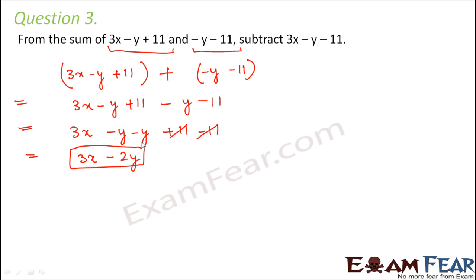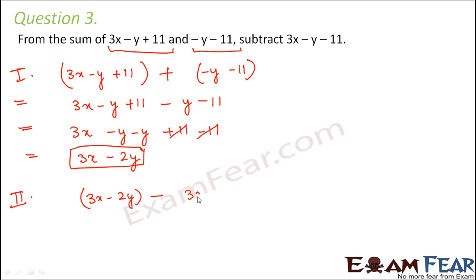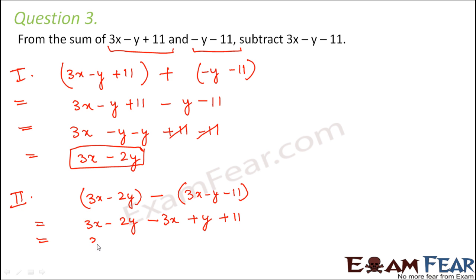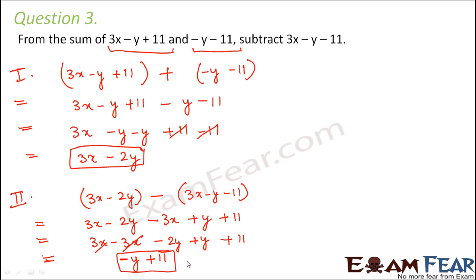From this sum of 3x minus 2y, we subtract 3x minus y minus 11. Rearranging: 3x minus 2y minus 3x plus y plus 11. Collecting like terms: 3x minus 3x gives 0; minus 2y plus y gives minus y; plus 11 remains. So the final answer is 11 minus y.